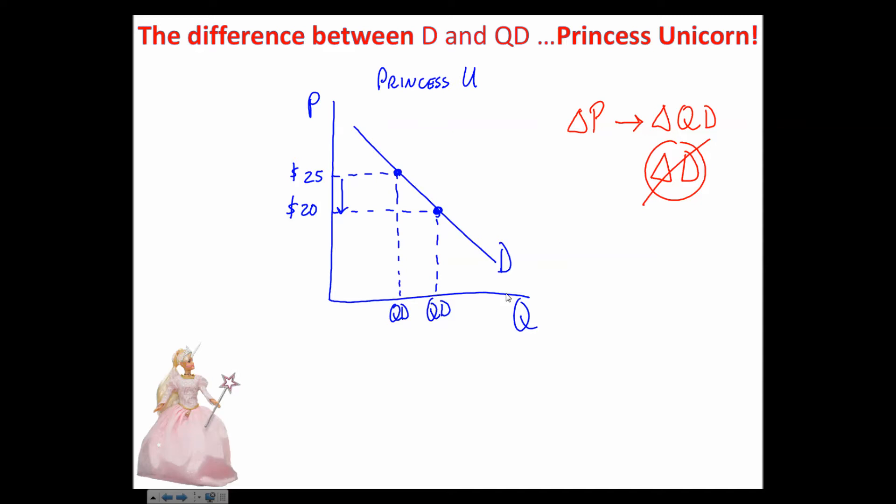So what does change demand, or what would a change in demand actually look like? Well, if demand were to change, let's say demand increases - that means now at the $25 price there are more people who would like to buy it. That would indicate to us that the demand actually increased. Or let's say you keep the price at $25 and fewer people want to buy it - that would indicate to us that the demand has actually decreased. It's pretty straightforward, right?